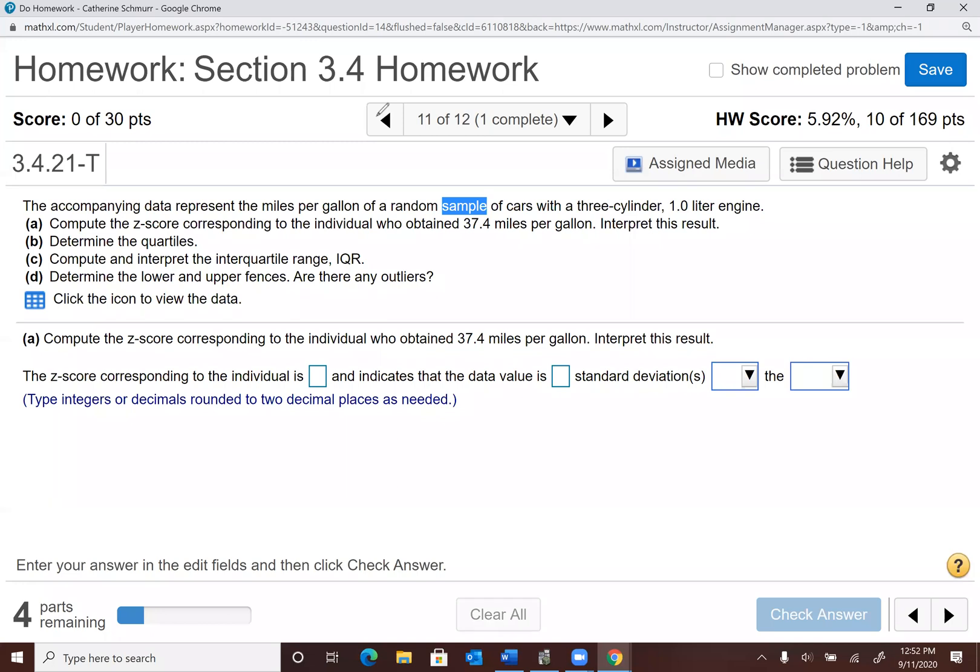So as a reminder, what we need when we're finding a z-score is we need to use the formula z equals the value minus the mean, and I'm going to use the symbol for sample mean because I know I'm dealing with a sample, divided by the standard deviation. So there's my formula for z-score.